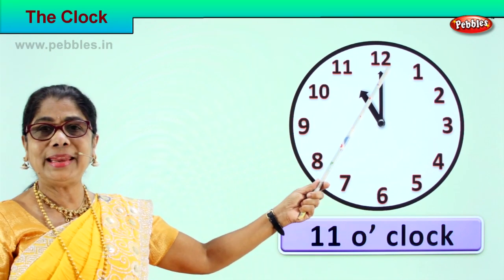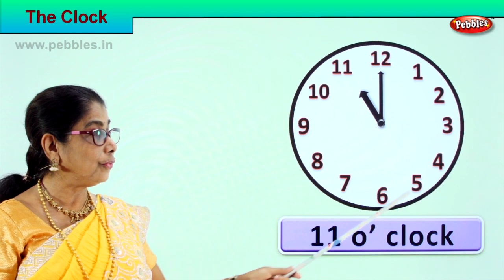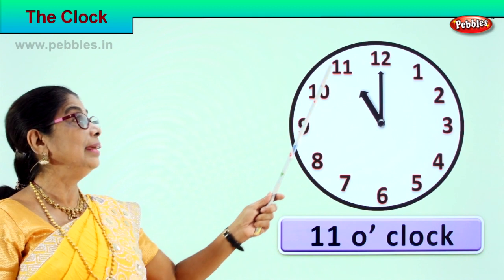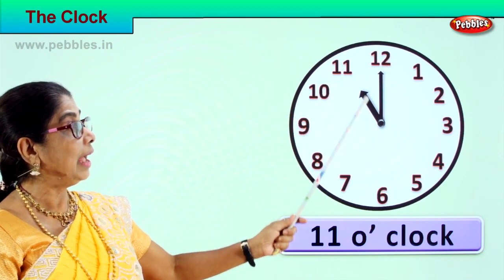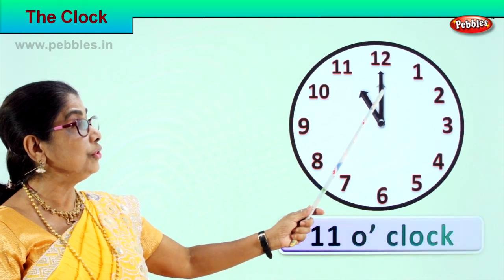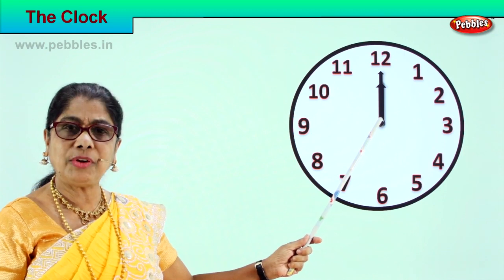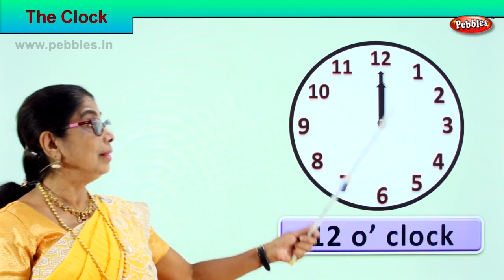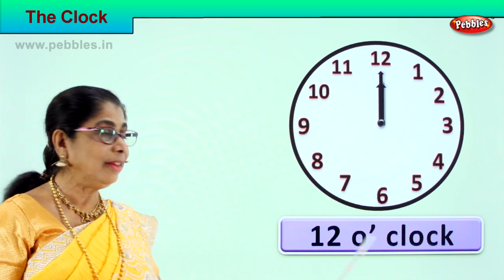Now the minute hand goes from one, all the way to eleven, and comes back to twelve. The hour hand from eleven shifts to twelve. So both hands are now pointing towards twelve. How do you read this time? What time is this? You read it as twelve o'clock. The hour hand is on twelve, the minute hand is on twelve — twelve o'clock.